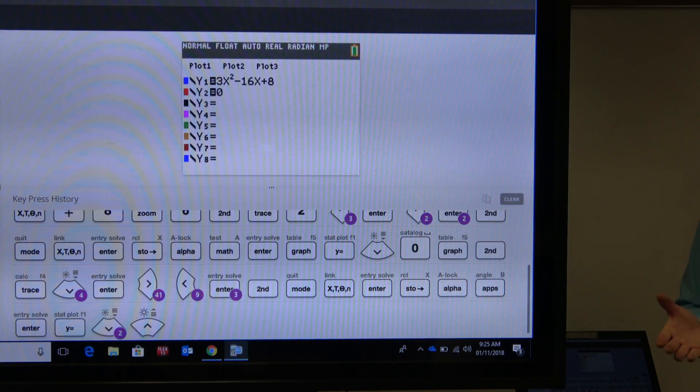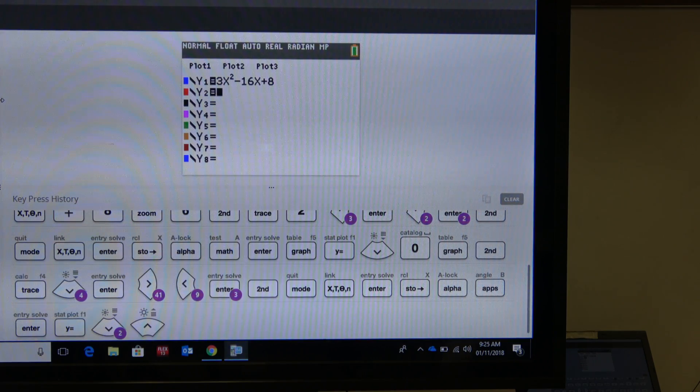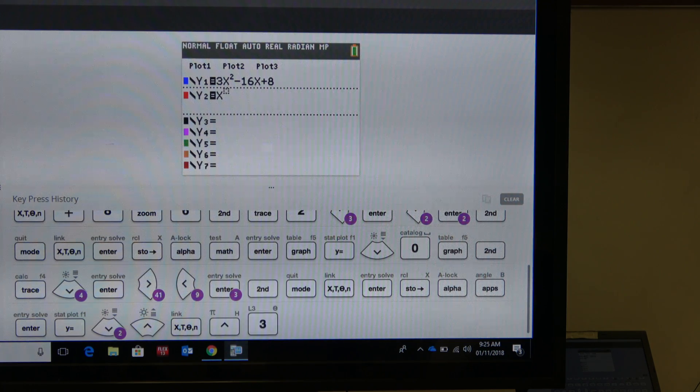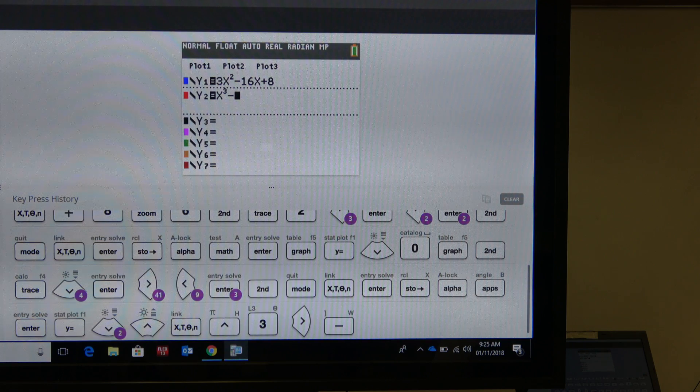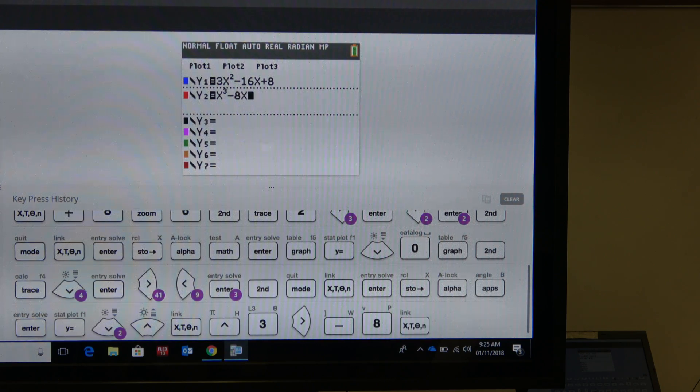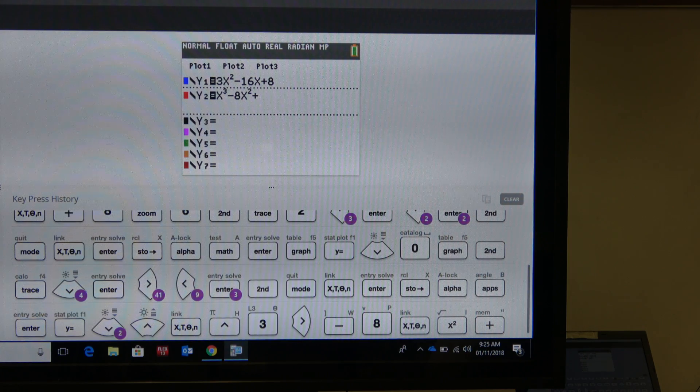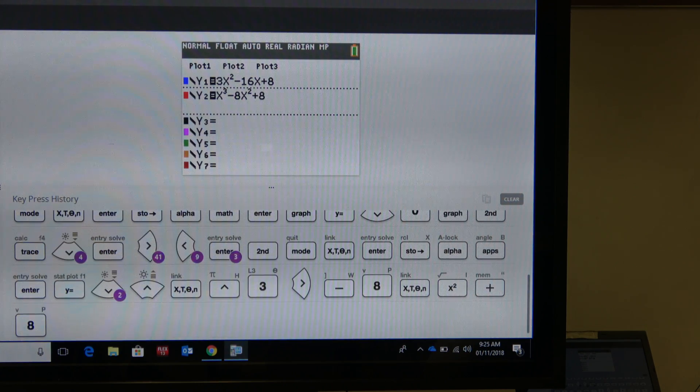It doesn't really matter which order. You're just going to have to remember that velocity we put in y1 and position we put in y2. So anyways, this is going to be x cubed over 3 minus 8x squared plus 8x. So now that's the position function.